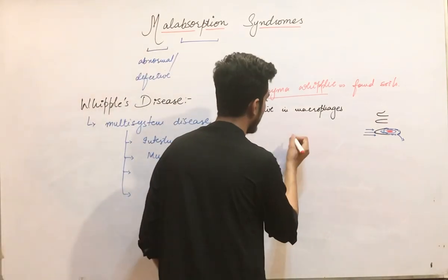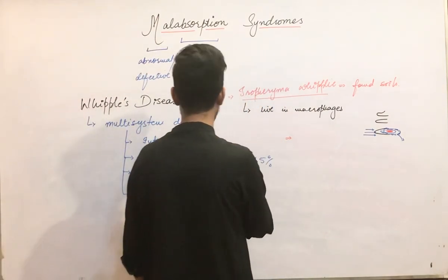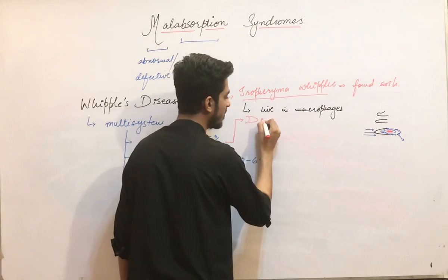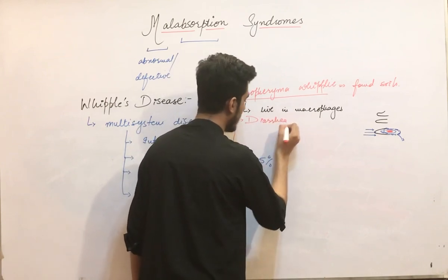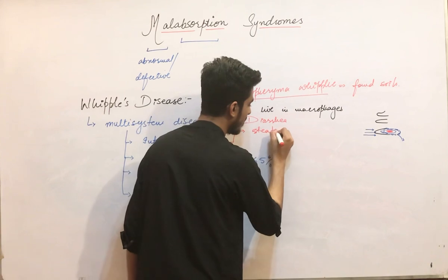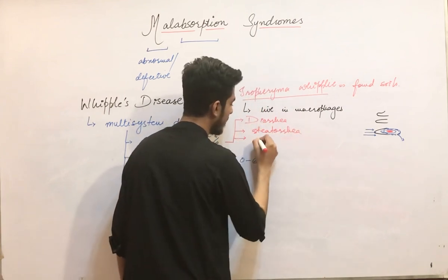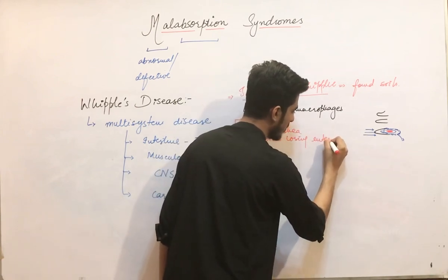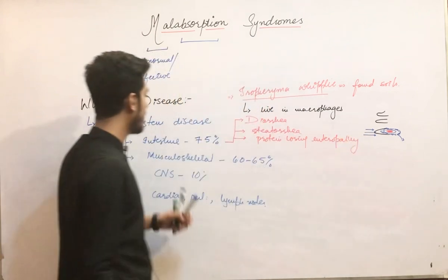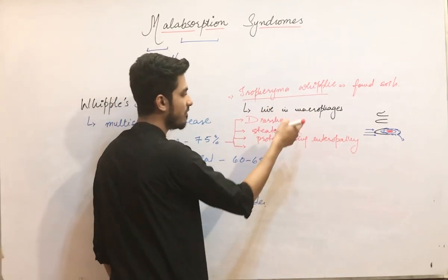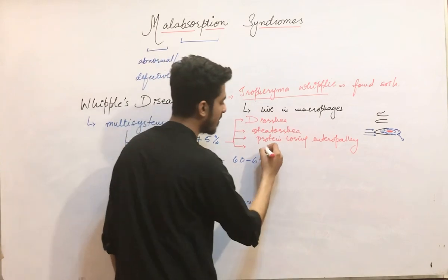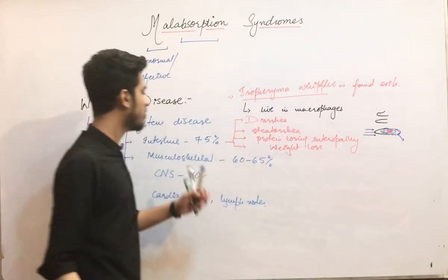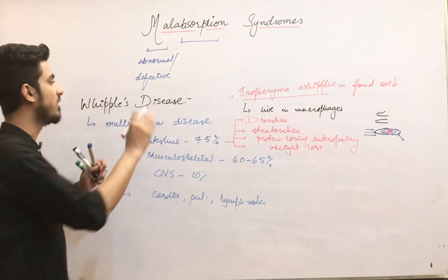In the intestine, the intestinal features include diarrhea, steatorrhea because fat is not absorbed, and protein-losing enteropathy. When all these malabsorption syndromes are occurring, the patient will also have weight loss. These are the intestinal features of Whipple's disease.